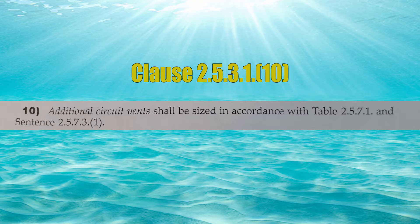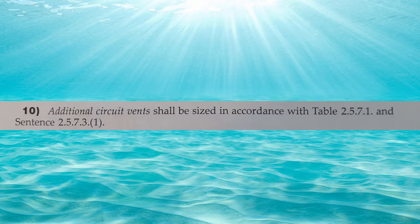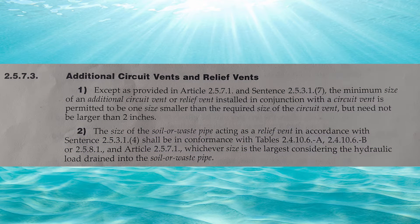Part 10: additional circuit vents shall be sized in accordance with table 2571 and sentence 2573 Part 1. Now we've already been through at least half of this. If you want an explanation of 2573 Part 1, that is in circuit vent video 3, so you can go back and watch that one. I will leave it up on the screen so you can read through it if you want.